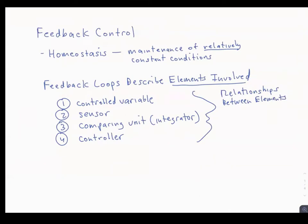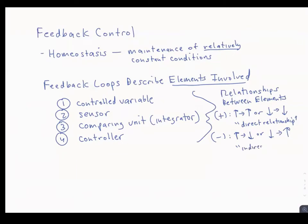All of these elements have relationships between them that can be illustrated by a positive sign, which means if you increase one element the other element goes up, or if you decrease one the other goes down — this is called a direct relationship. A negative sign is the opposite: increase causes a decrease or decrease causes an increase, and that's called an indirect relationship.